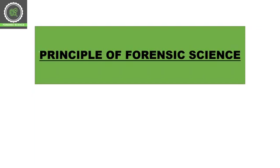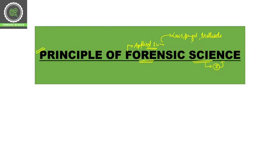Hello everyone, welcome to today's class. In this class we are going to cover principles of forensic science. Forensic science has seven specific principles which only concern forensic science. We all know that forensic science is applied science — its nature is applied science. In applied science we can apply laws, principles and methods of pure sciences to solve crime.